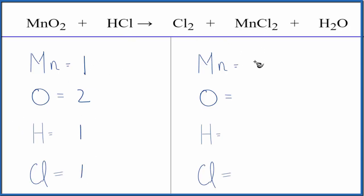On the product side, we have the one manganese. Oxygens, we have one. Hydrogens are two. And chlorines, we have two here, plus we have these two here. So we have a total of four.